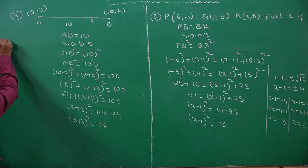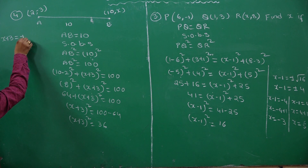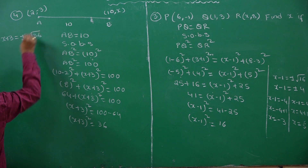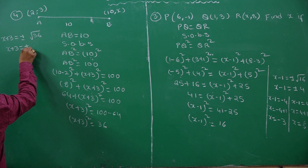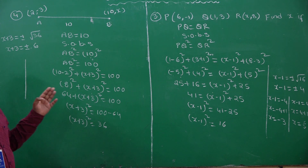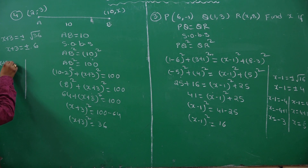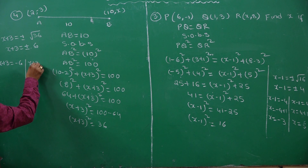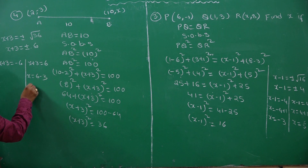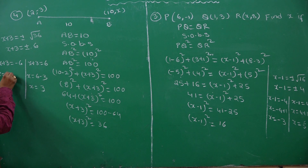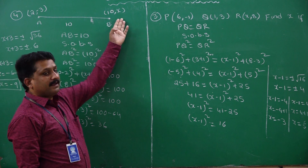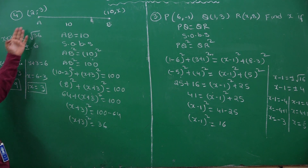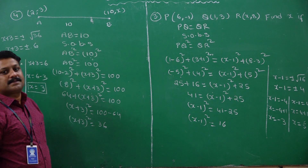Transferring 64 to the right hand side: (y plus 3) whole square equals 100 minus 64, which is 36. So y plus 3 equals plus or minus root 36, which gives y plus 3 equals plus or minus 6. Case 1: y plus 3 equals minus 6, so y equals minus 9. Case 2: y plus 3 equals plus 6, so y equals 3. My ordinate can be 3 or minus 9.